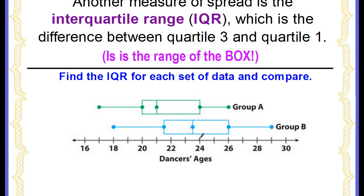It's the box area, so we find the highest value of the box area which is at 24 for group A, and we're going to subtract the lowest box value which is at 20. So the IQR, or the spread of the box, is four years for group A. This means that the middle 50% of the ages only has a variability of four years.